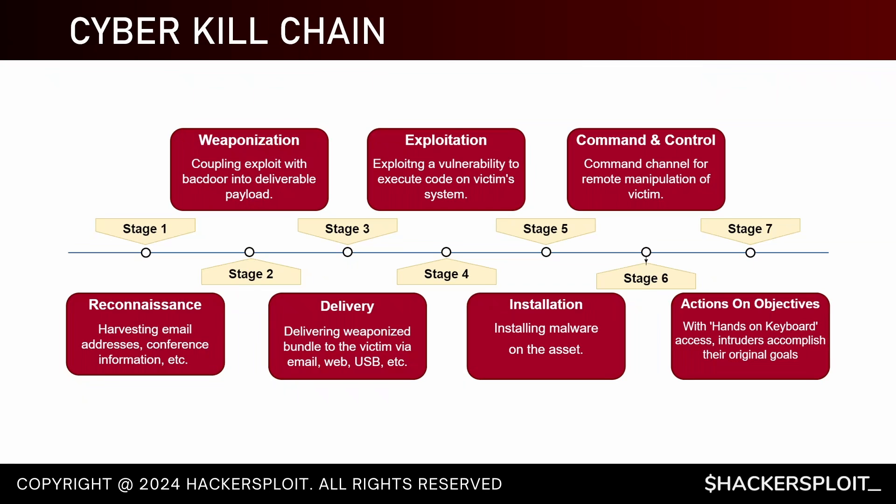This is where the Command and Control channel is established — skipping over installation of malware such as rootkits. Then comes Actions on Objectives — the attacker performs additional reconnaissance, standard post-exploitation activities, and then actions aligned with their original objective. Examples include deploying ransomware, deleting data, or exfiltrating data. As a red teamer, however, you typically draw the line before actually deleting anything within an organization's digital infrastructure.